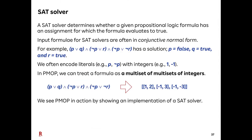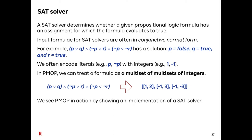We see how PMOP changes programming by examining an implementation of a SAT solver. A SAT solver determines whether a given propositional logic formula has an assignment for which the formula is true. For example, the formula on the slide has the solution p=false, q=true, r=true. SAT solvers typically work on formulas in conjunctive normal form. We often encode literals with integers — literal p is represented by 1, and literal not-p by -1. A formula in conjunctive normal form can be treated as a multiset of multisets of integers.